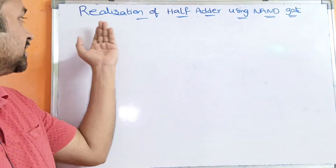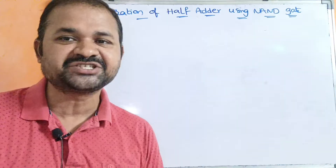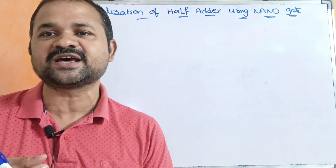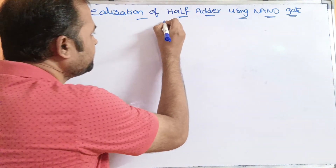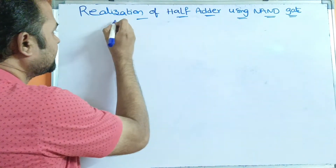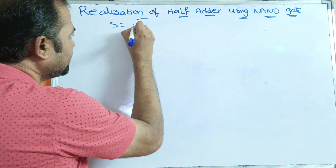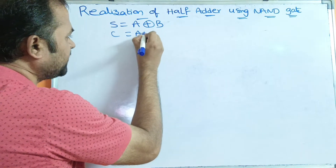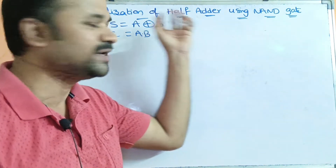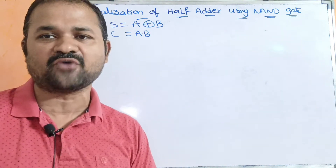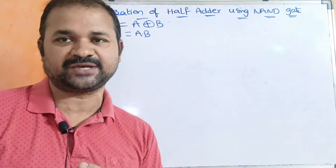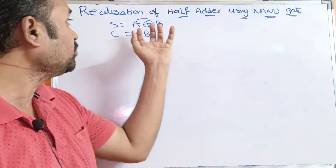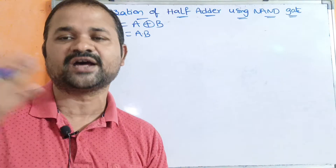Let us discuss the realization or implementation of a half-adder using NAND gates. We know the expression for the sum as well as carry for the half-adder. Sum is equal to A exclusive-OR B, where the inputs are A and B, whereas carry is equal to A AND B. We have to design a circuit for the half-adder using only NAND gates. In the next video, we will see how to implement the half-adder using another universal gate called the NOR gate.